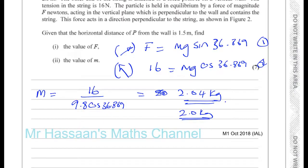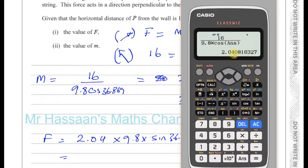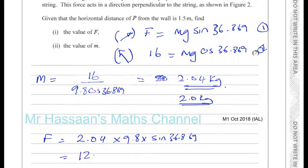And the value of F, well, F is going to be 2.04 times 9.8 times the sine of our angle, 36.869. So we're going to have this value times 9.8 times the sine of the angle which we stored as B, which is 12. So the force is 12 newtons. So that's M and that's F and that's the answer to this question.